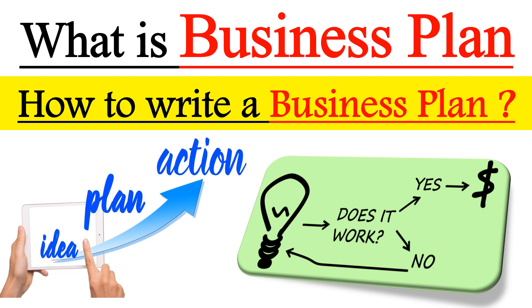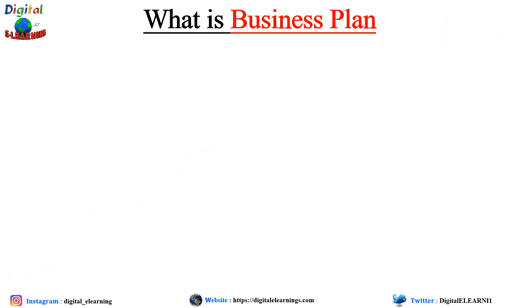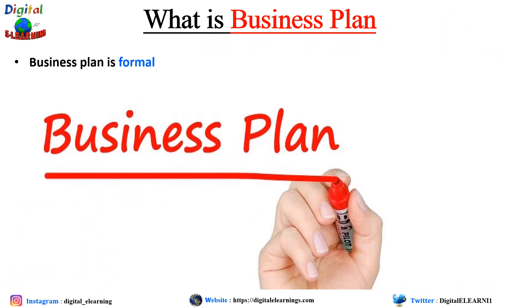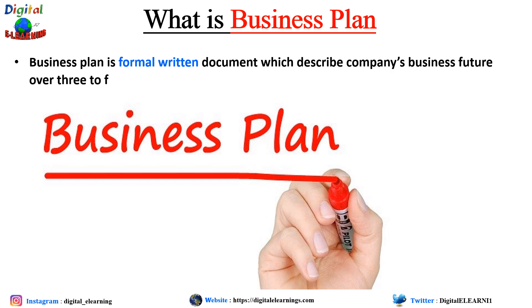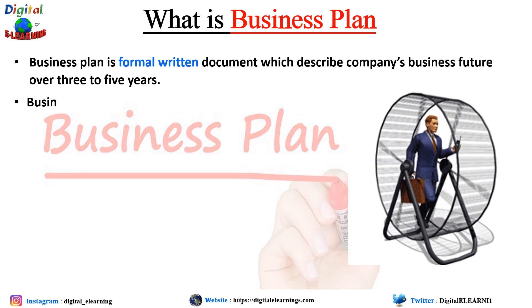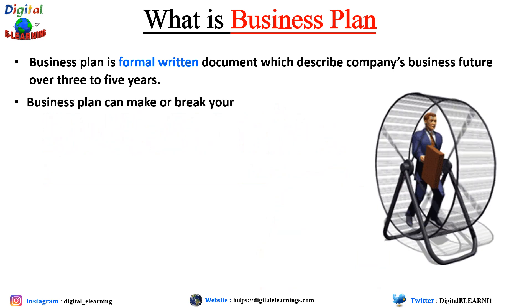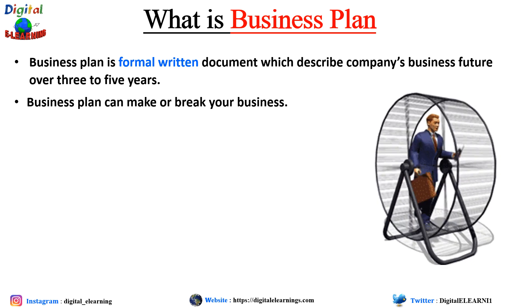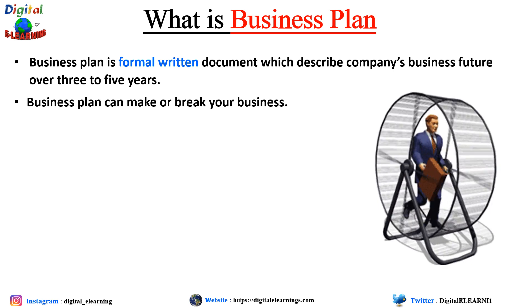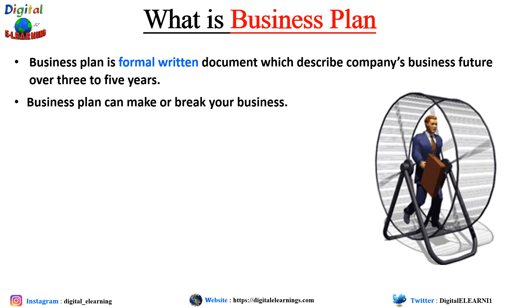So what is a business plan and what are the typical elements? A business plan is a formal written document which describes the company's business future over three to five years. In short, it tells us what you plan to do and how you plan to execute it. Sometimes a business plan can make or break a small business deal as it provides a clear roadmap for your company's future.